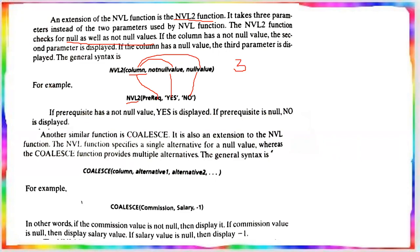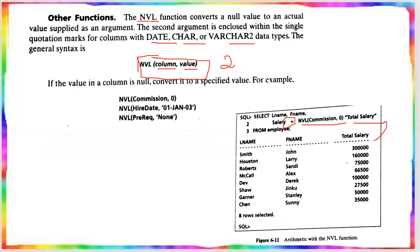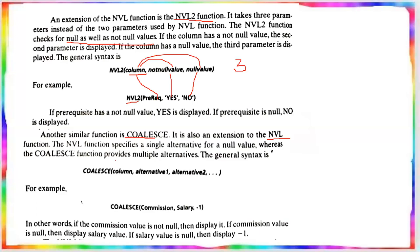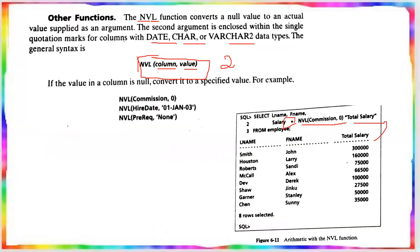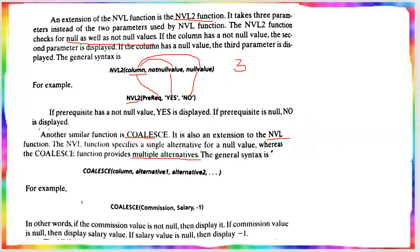There is another function called COALESCE, which is an extension to the NVL function. In NVL, you replace one null with one argument. In COALESCE, you can provide multiple alternatives — many alternative values to substitute for null.